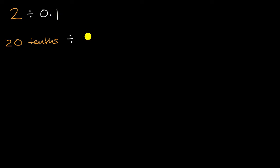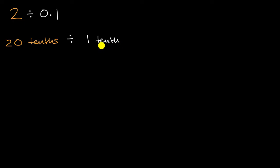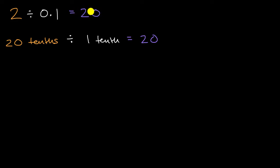We can rewrite this as 20 tenths divided by one tenth. If you have 20 of something and you want to divide it into groups of one of that something, how many groups are you going to have? Well, you're going to have 20 groups. So this is going to be equal to 20. Two divided by one tenth is equal to 20.